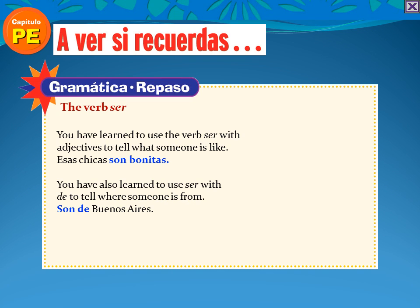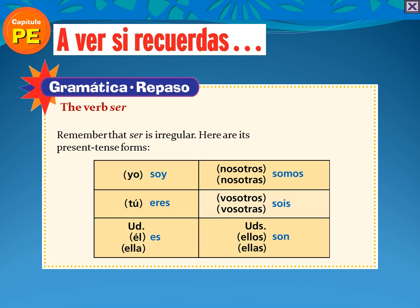Now we're going to get into the conjugation of the verb ser. You've learned, hopefully in Spanish one, the verb ser — it's probably the most common verb in Spanish. We're going to use it mainly this year to talk about adjectives we've learned, talk about what people are like, talk about someone's profession. You also use ser to tell where somebody is from. Yo soy de Colorado. Yo soy de los Estados Unidos. The verb ser is completely irregular, so you're going to have to look at this chart and work on memorizing it for each individual person.